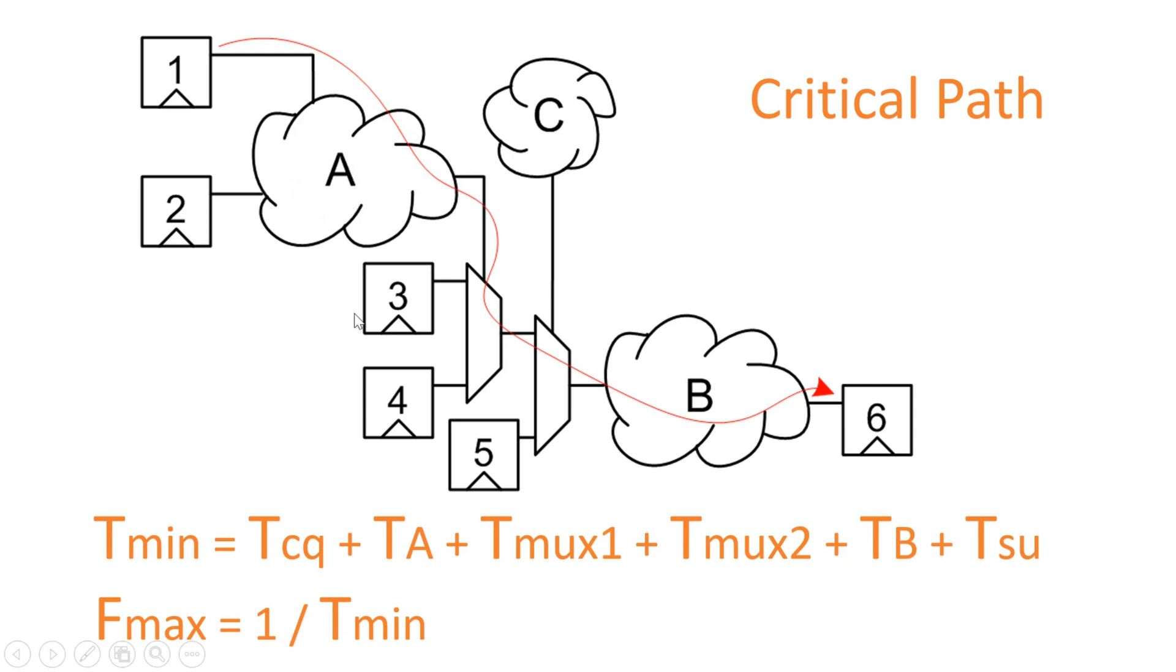Let us say its delay is TA and combinational logic delay of T max 1 and propagation delay of T max 2 and propagation delay of logic B, let us say it is TB, and setup time of flip-flop 6. And frequency will always be inversely proportional to the time period. If T minimum will be more, the operating frequency will always be less.